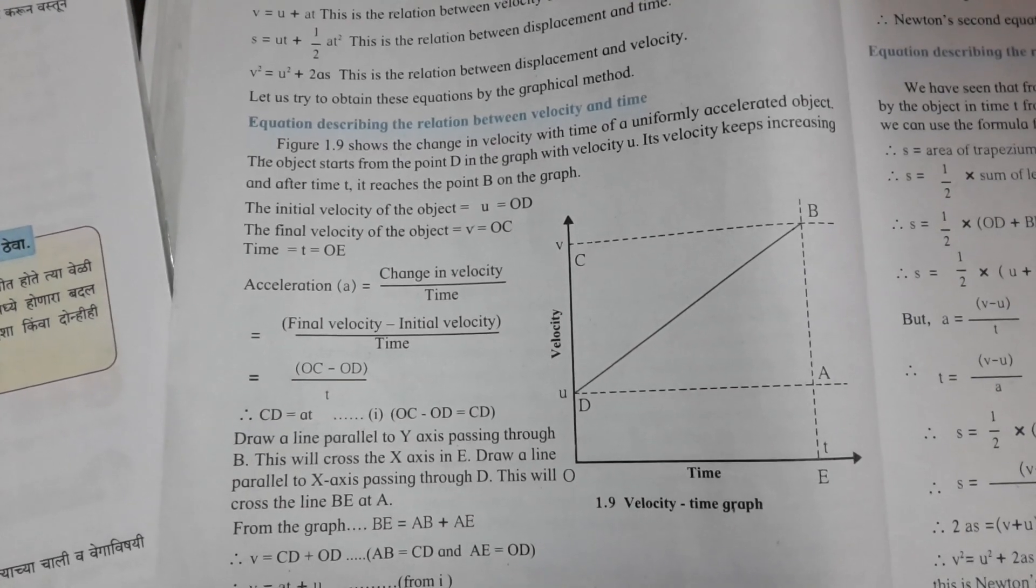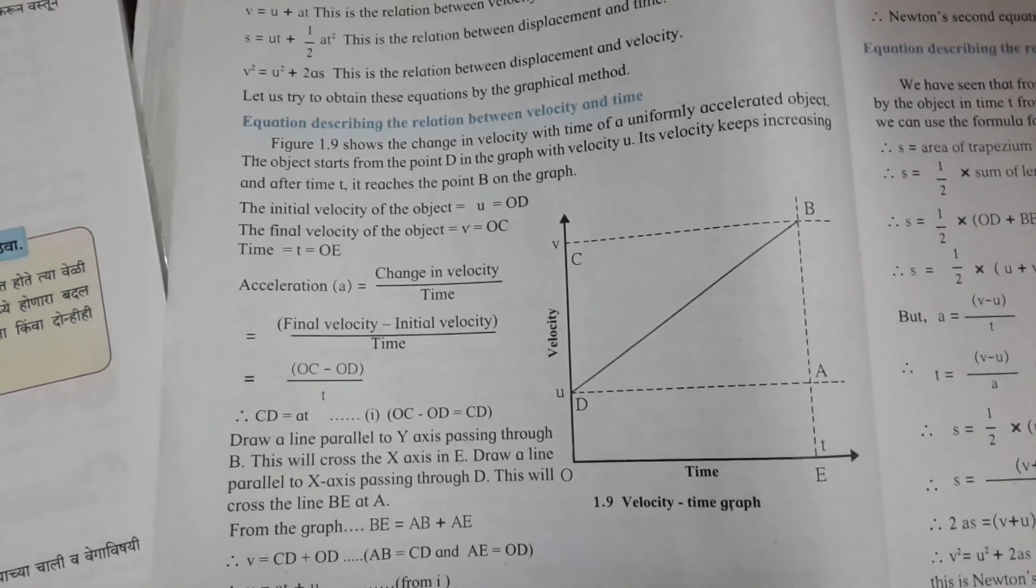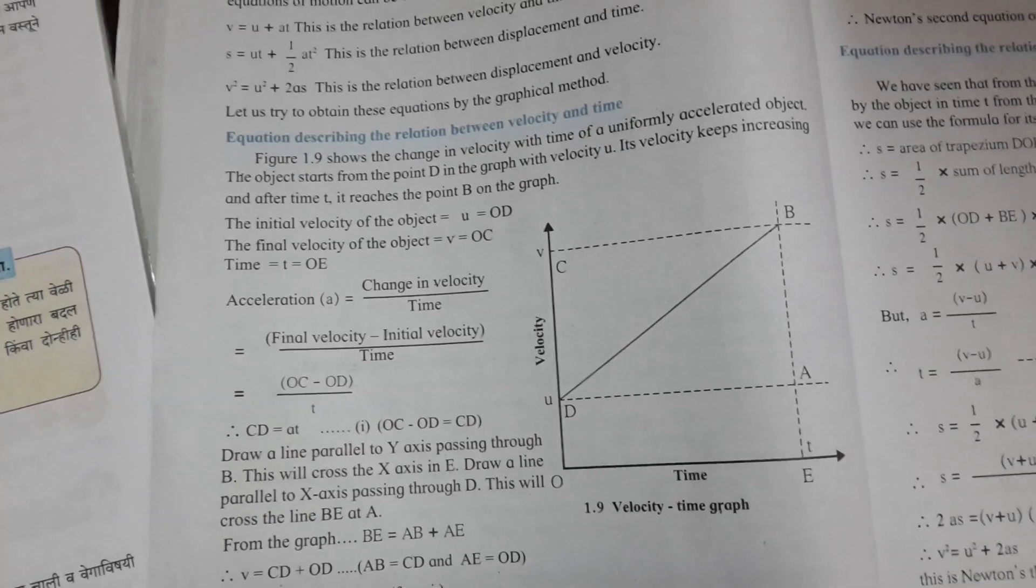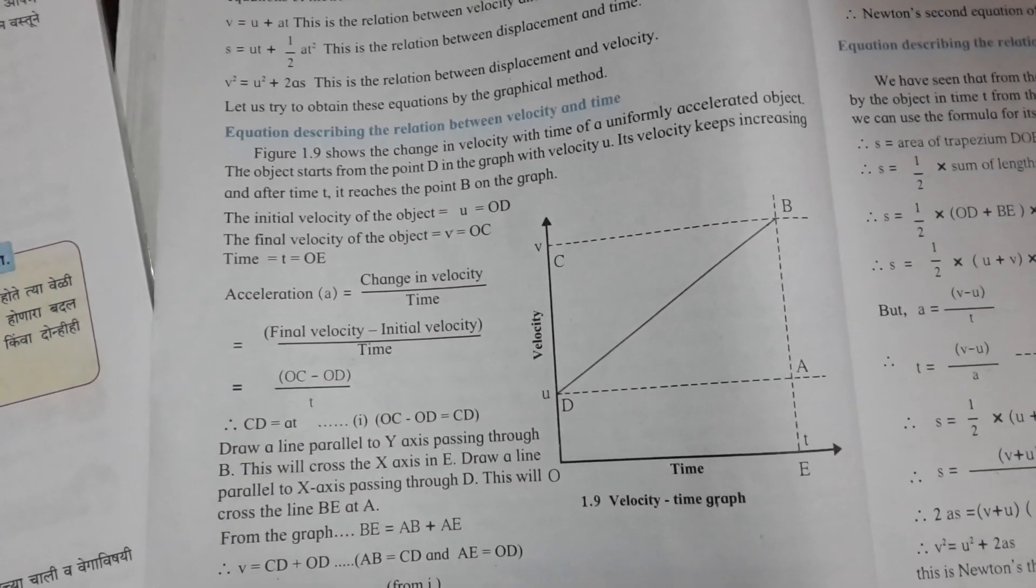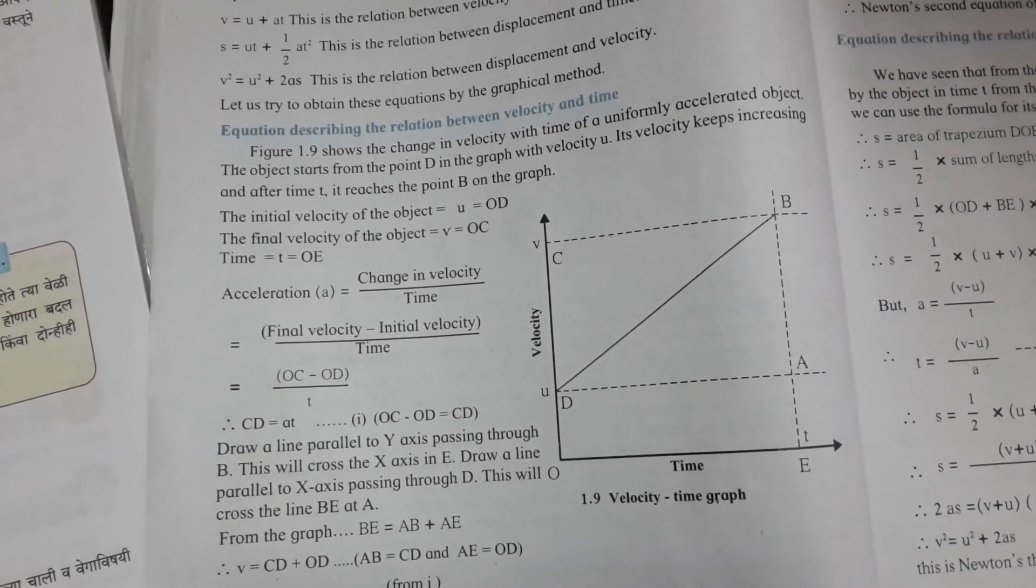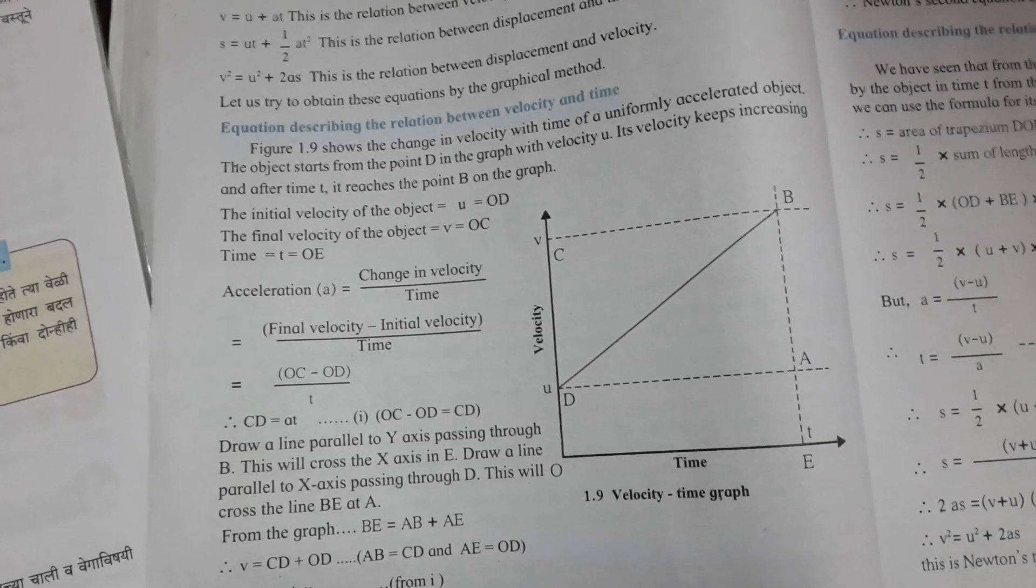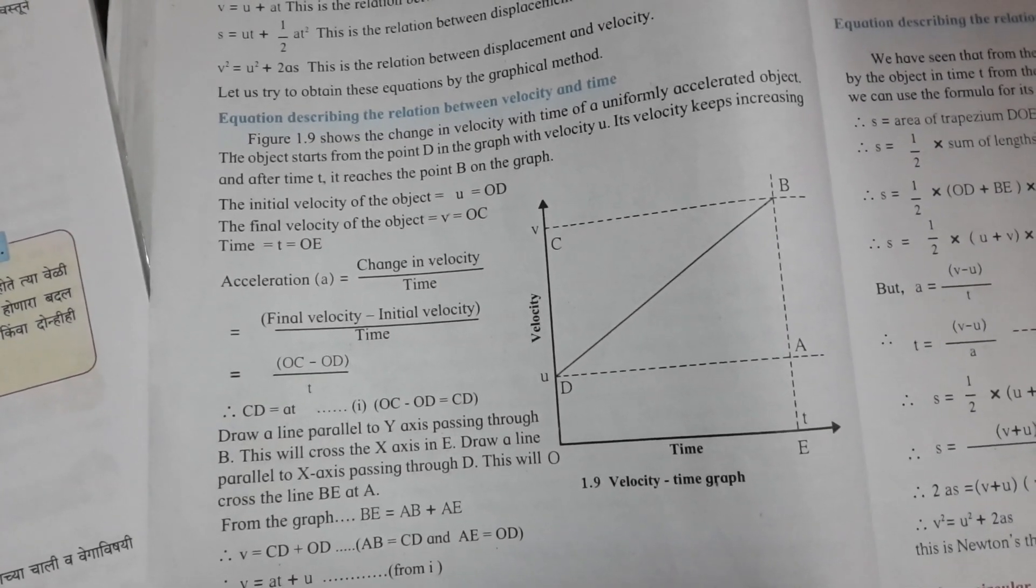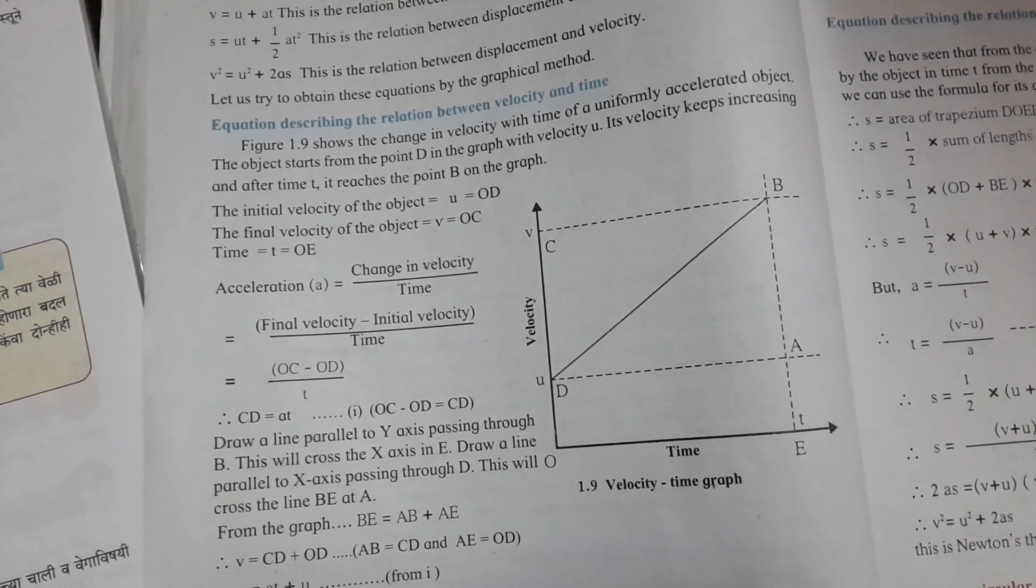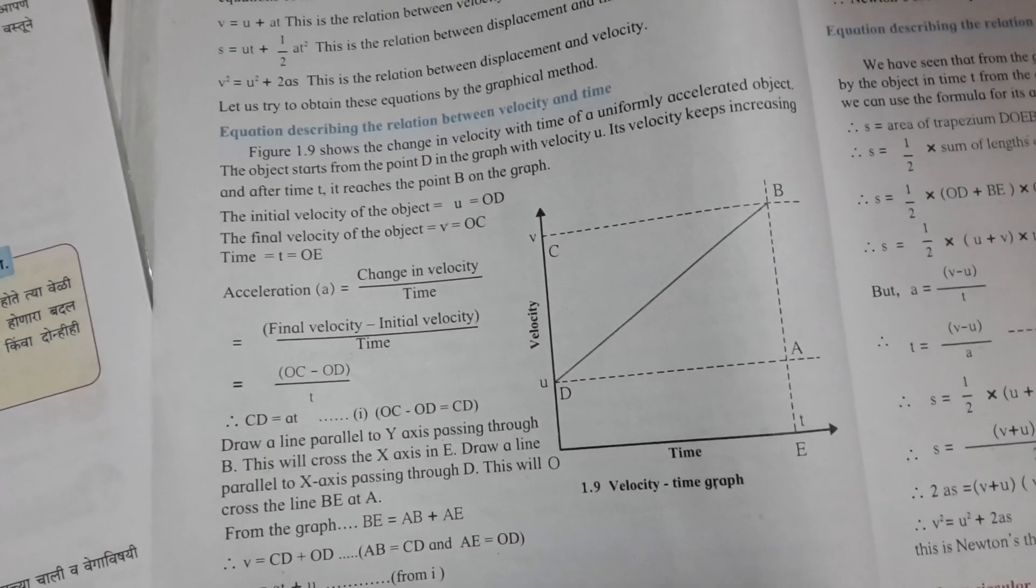The initial velocity of the object is U, shown in the graph as OD. The final velocity of the object V is equal to OC. Time T is equal to OE.